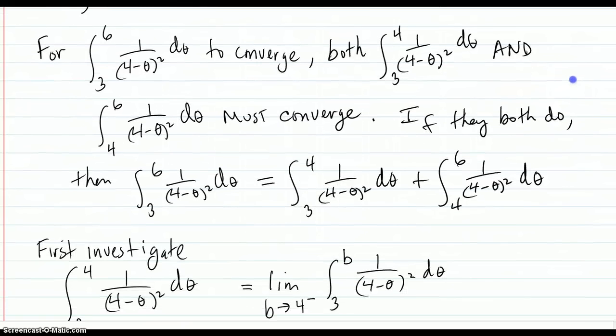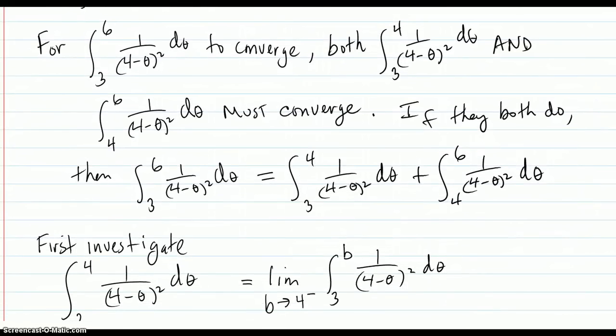So the idea is, for the integral to converge, both 3 to 4 and 4 to 6 must converge. And if they both do converge, then the original integral converges to the sum of those two. But if either one does not converge, then the original integral does not converge.